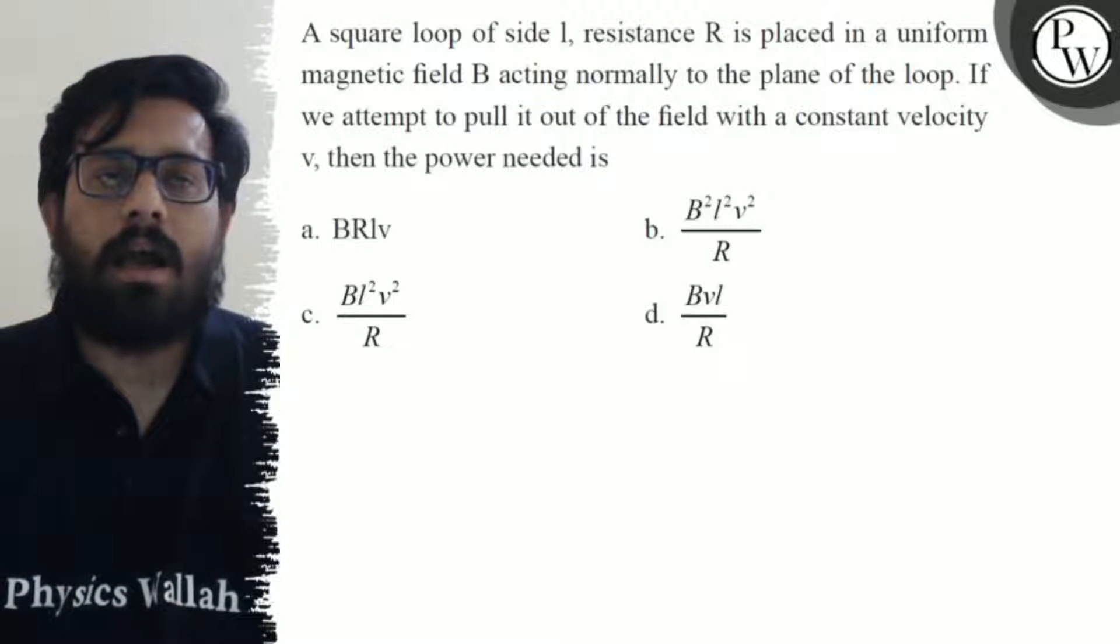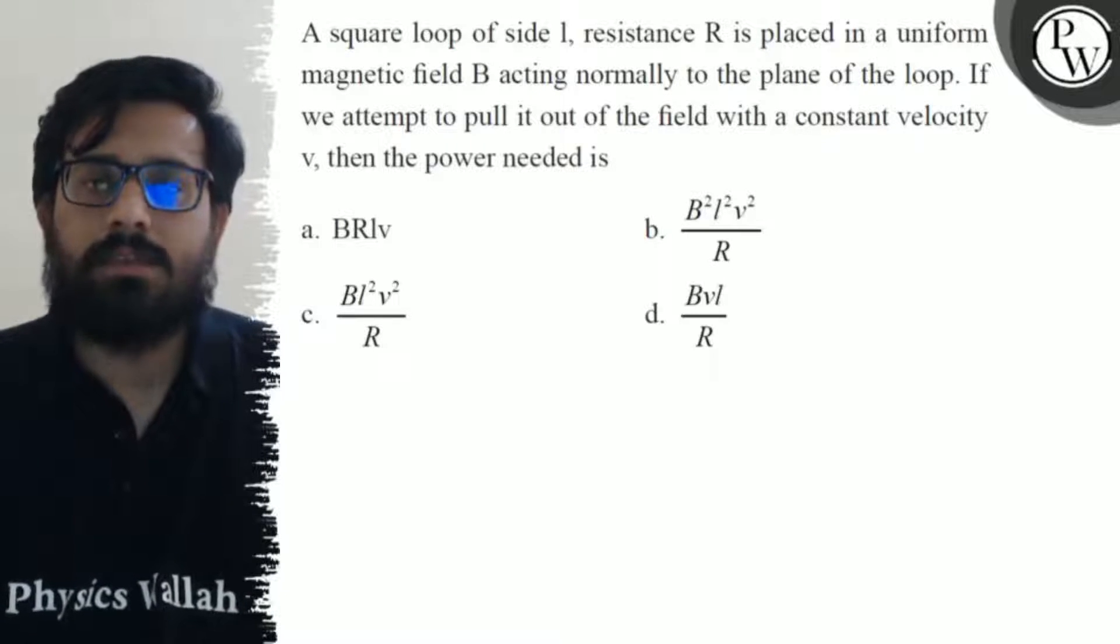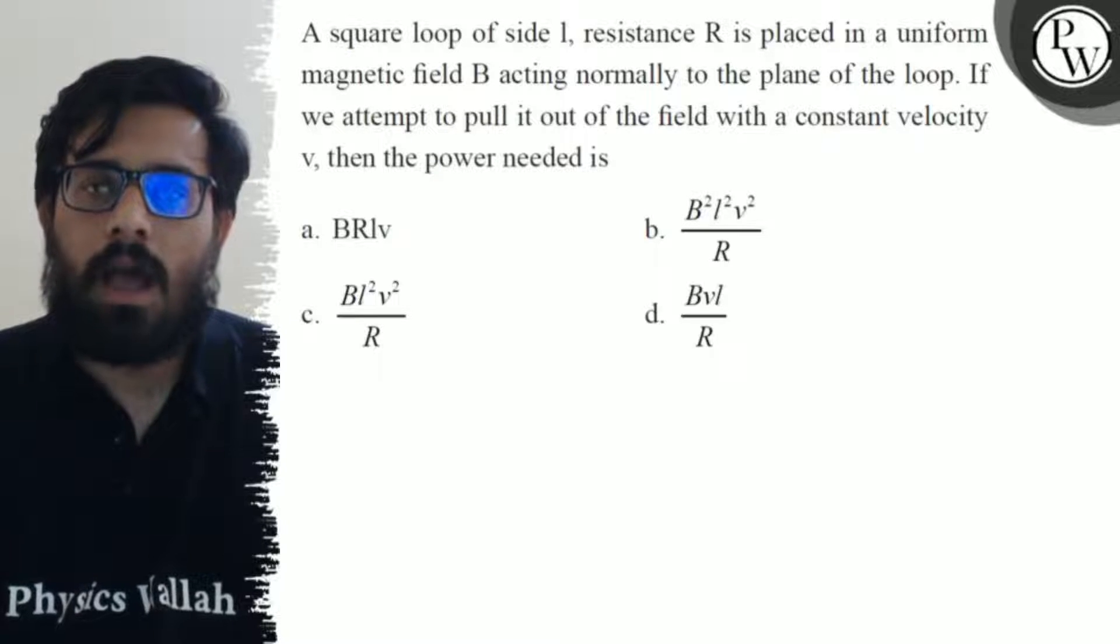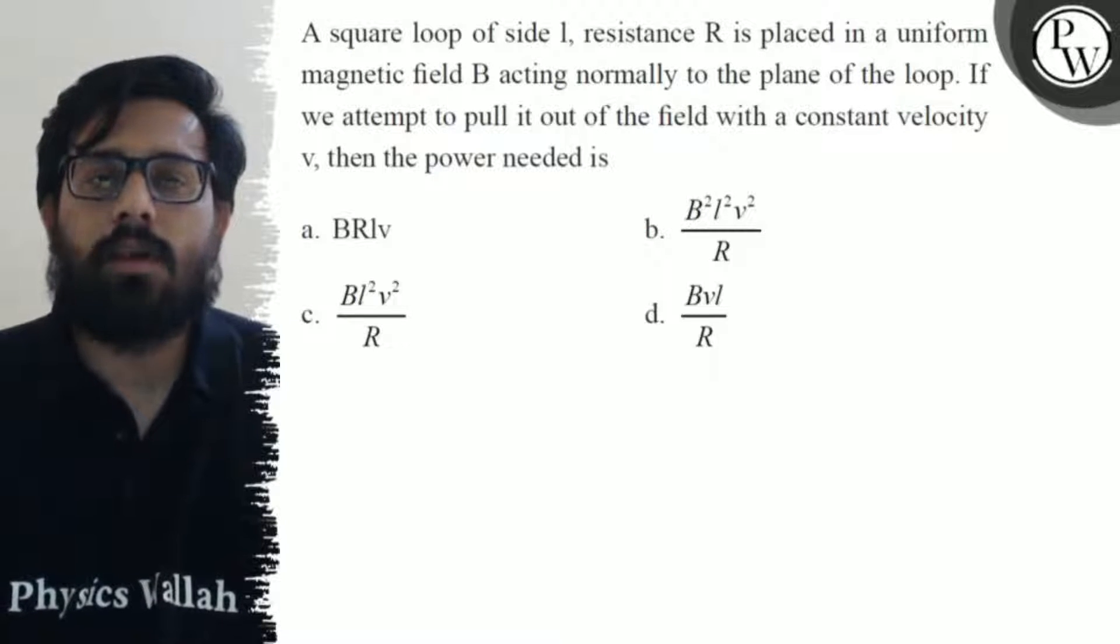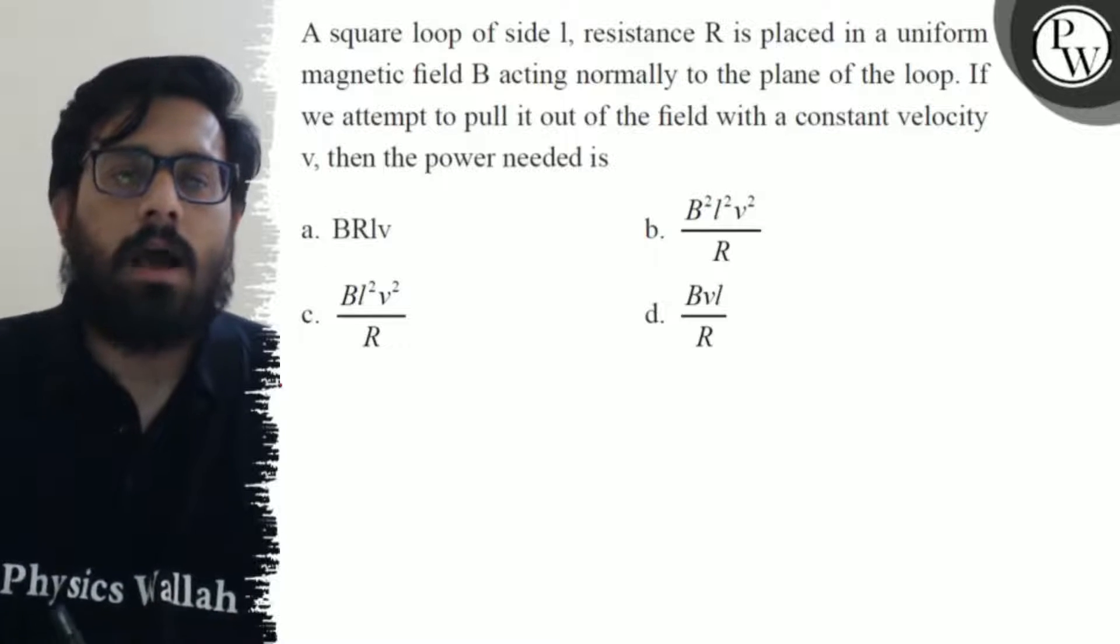First option is BRLv. Second option is B square L square V square upon R. Third option is BL square V square upon R. And fourth option is BVL upon R.